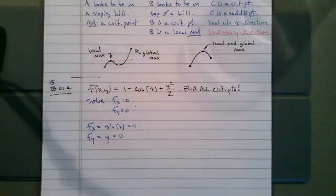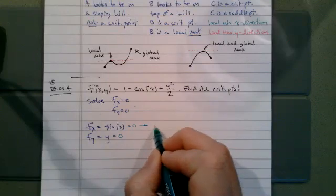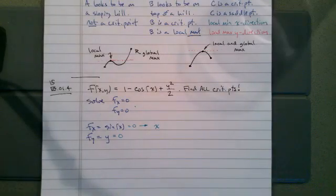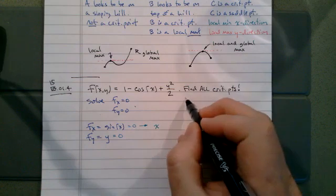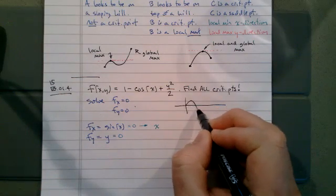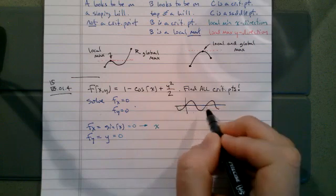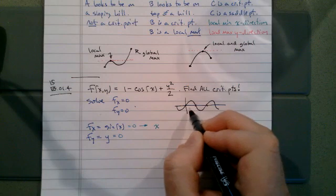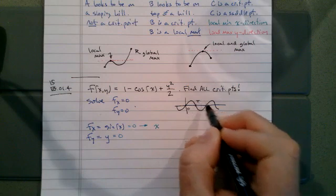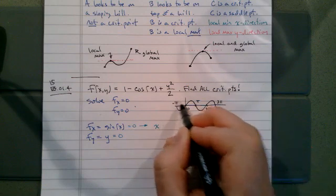But when we have sine x equals zero, this gives us an infinite number of solutions. So sine of x equals zero means that x, if we think about the graph of sine, sine is zero at zero, and then at pi, and then at 2 pi, and then at 3 pi, and then back here at negative pi.